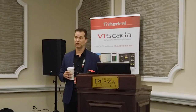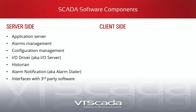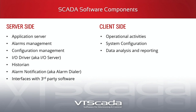Alarm notification usually requires a dialer or third-party software. Interfaces with third-party software are important — many customers, especially in oil and gas, take data from VTScada and share it with external software systems, or bring data from third-party systems into VTScada. On the client side there's a limited function set: operational activities as the primary function, system configuration on engineering workstations, and data analysis and reporting.